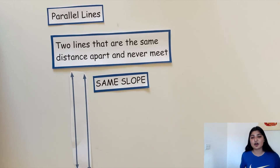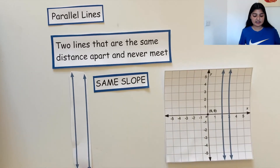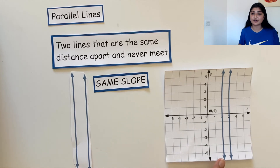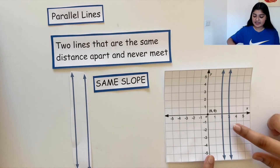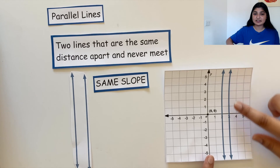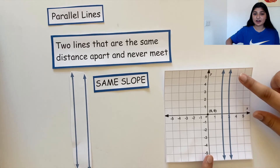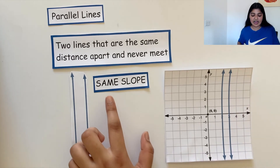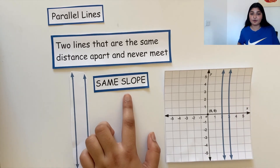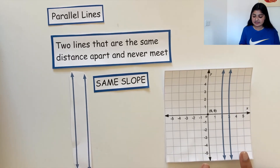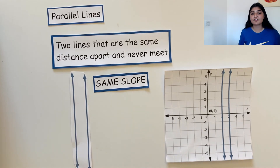Let's draw these parallel lines on a graph. Like those lines, these lines are also parallel. They continue in the same directions. And since they have the same slope, they are the same distance apart and will never meet or cross each other.